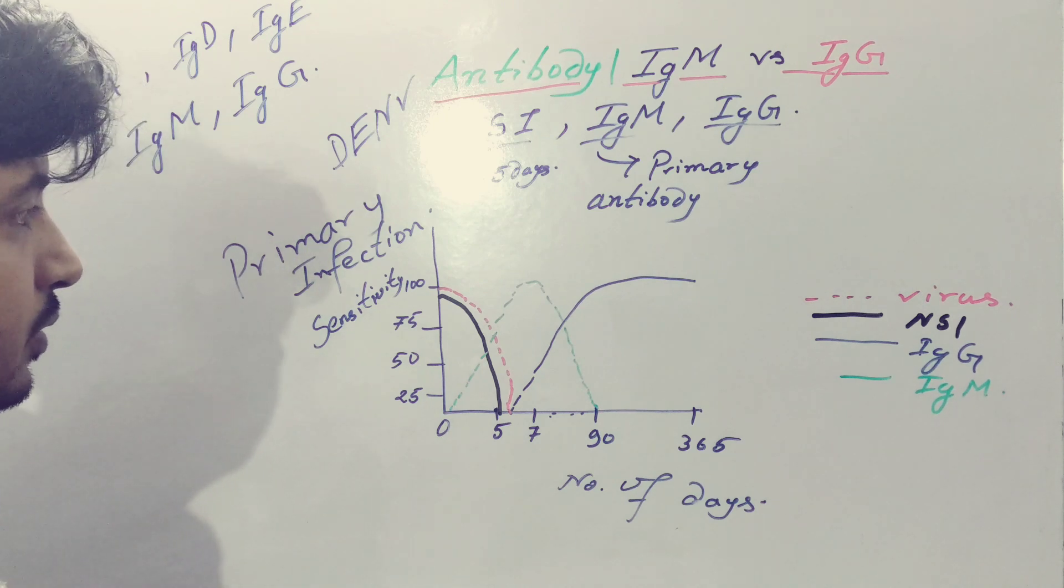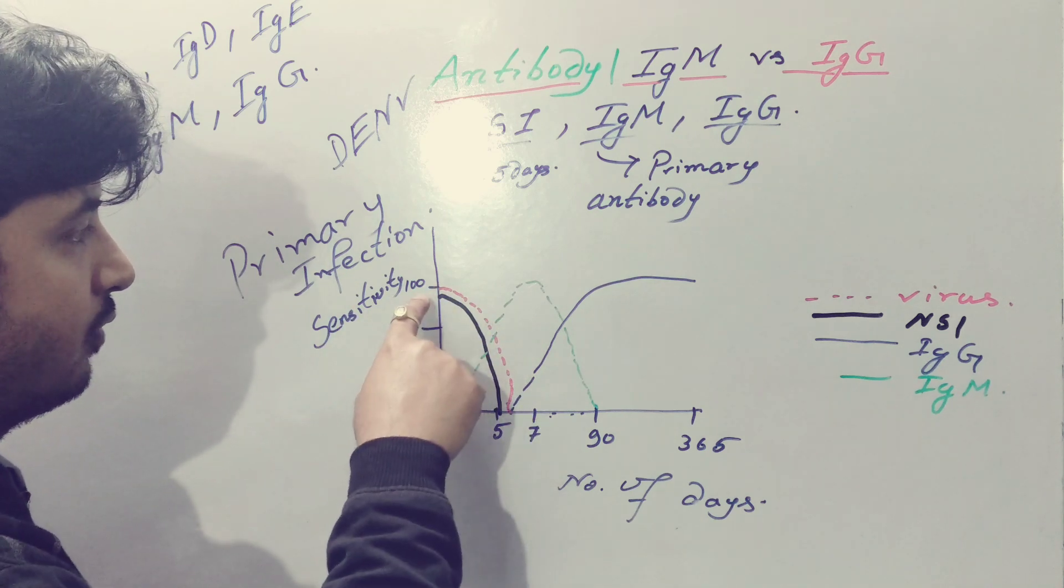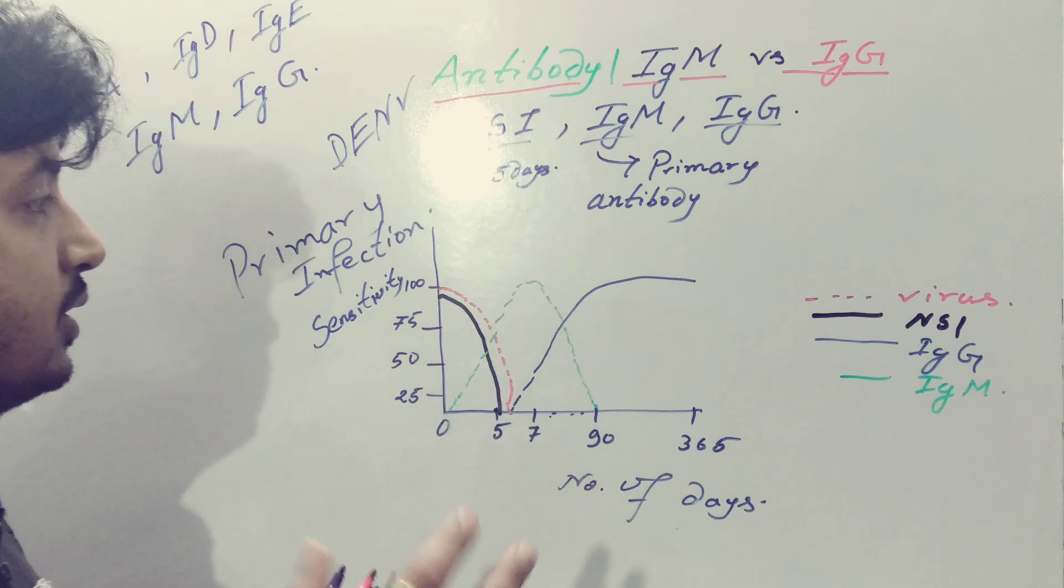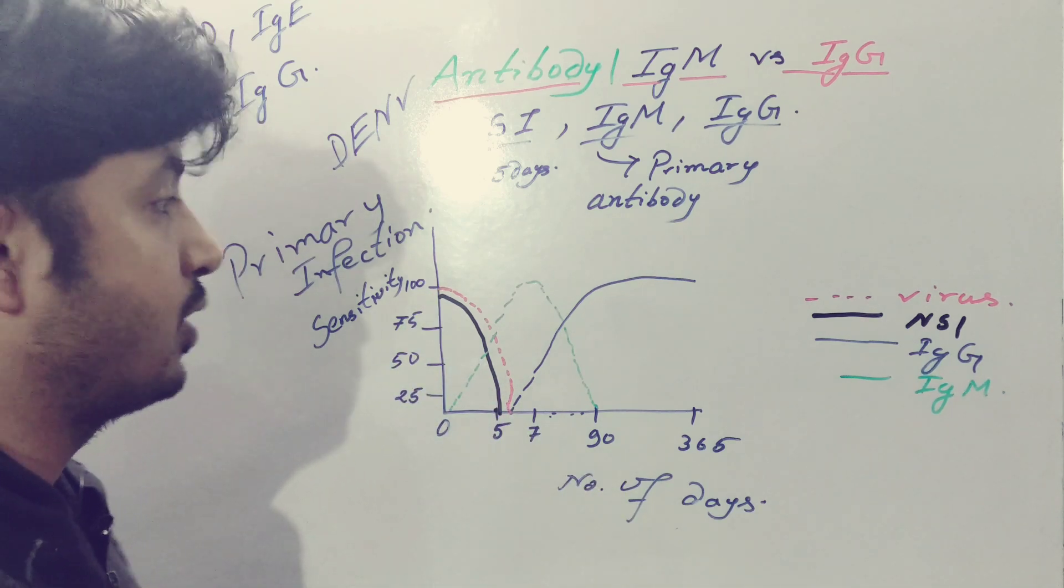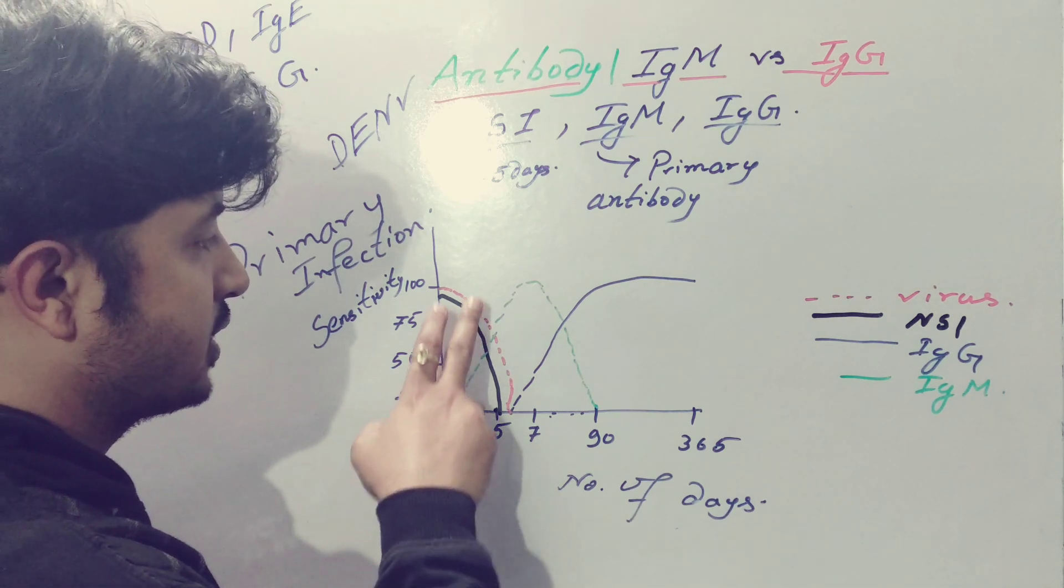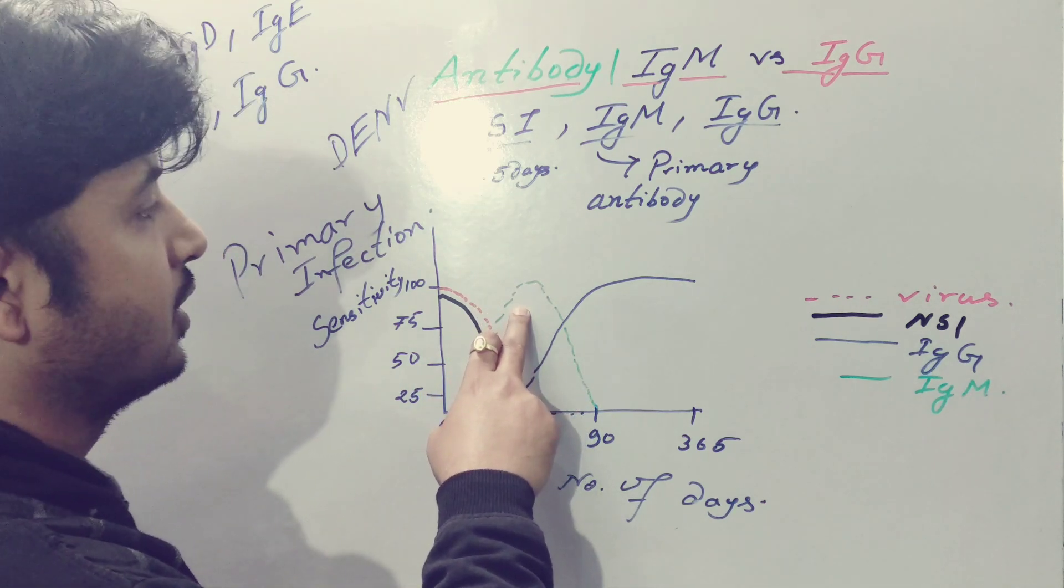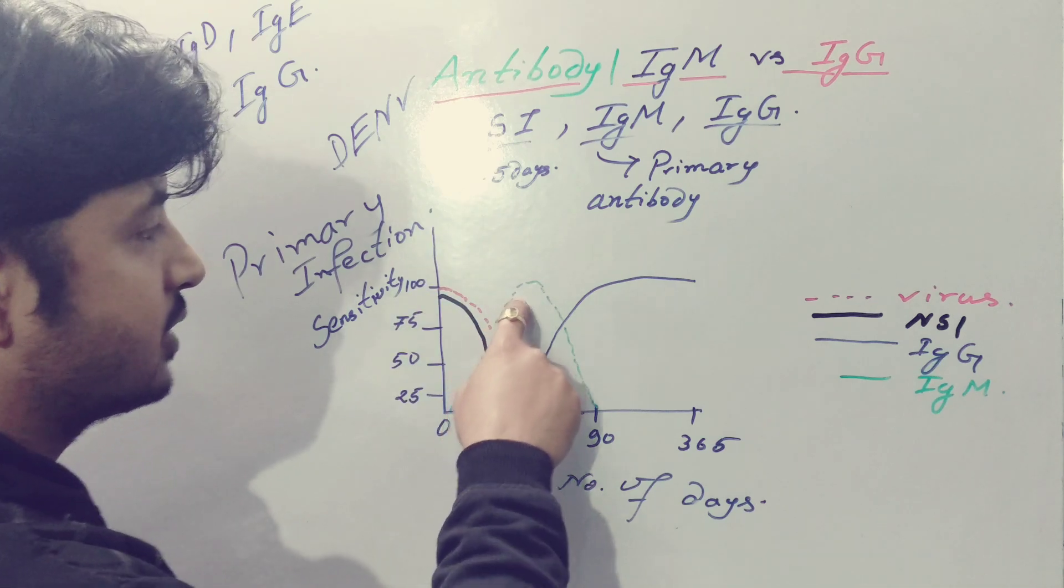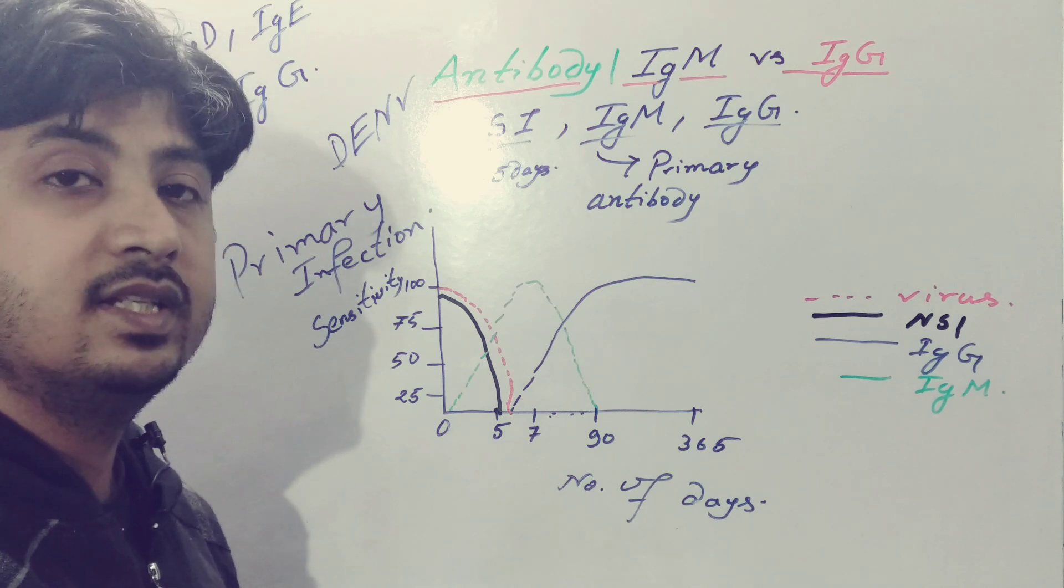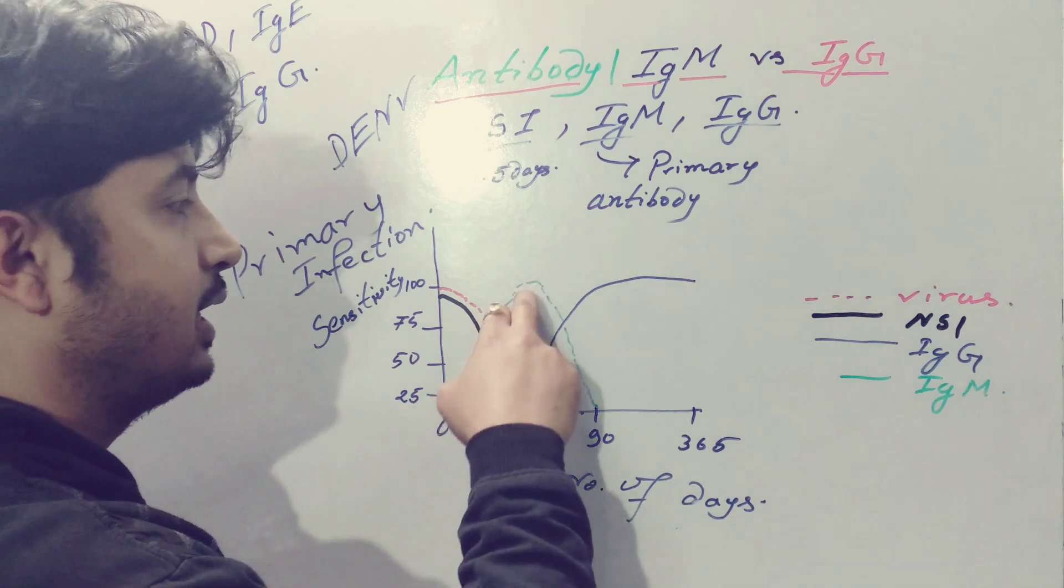You can see that when the virus level is at day zero and is 100% or near 100% inside the patient's body, the rising of IgM is a slow response. After five days it reaches the highest peak. The IgM response is much faster compared to IgG when it is a primary infection. After five days it is at peak level.